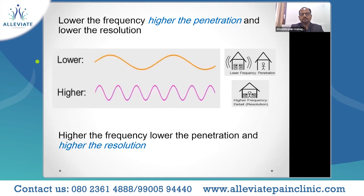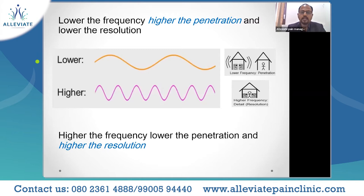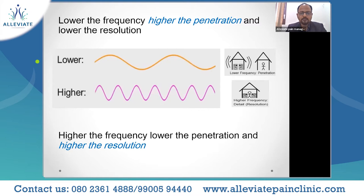As a clinician trying to achieve precision, resolution is important — it is very important to see the structures where we intend to do procedures or needling, such as the tip of the needle. That is achieved at higher frequency: at higher frequency, resolution is very detailed, but penetration is poor. This helps us choose based on the depth of our intended target. If the target is beyond 4 centimeters, it is advised to use lower frequency probes; for superficial structures, we use higher frequency probes where resolution is better.